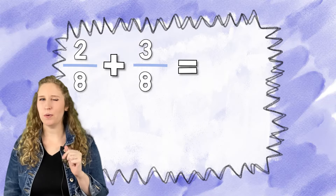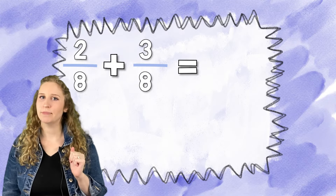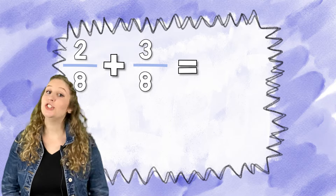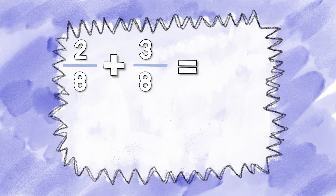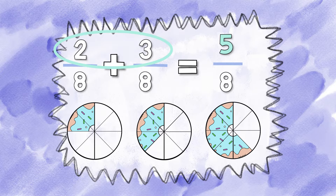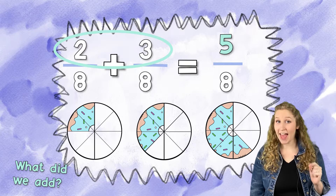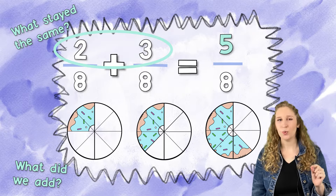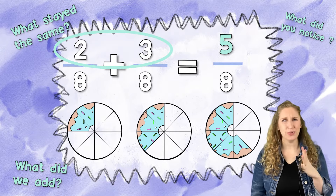I'm going to do a problem and I want you to see what you notice. Let's try this first one together: 2/8 plus 3/8. Now that you saw me solve that, what did we add? What stayed the same? What did you notice?